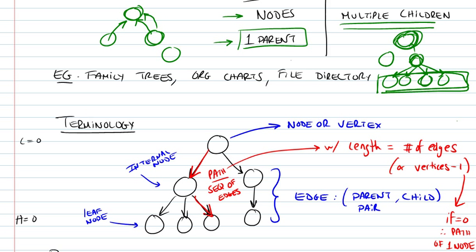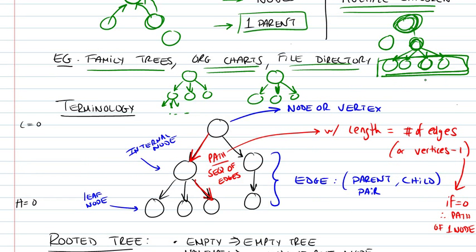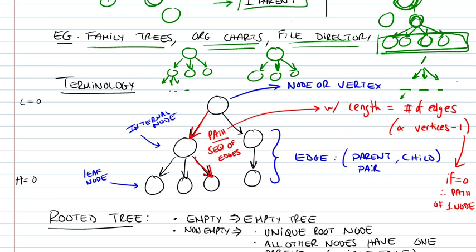What are some examples of a tree? A family tree would, of course, be a tree — you have parents and children, and each child has their own children, and so on. An organizational chart in a company would also be an example: you would have the CEO, followed by executives, and so on. A file directory in an operating system could also be thought of as a tree — you have the root, then other folders or directories, until you get to files. A file would be a leaf node, which is the last node in a tree — it has no children.